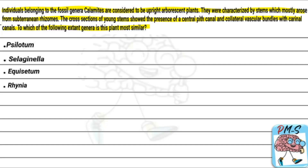Which extant genus is similar to Calamites? We have option A: Silotum, option B: Selaginella, option C: Equisetum, option D: Rhynia.